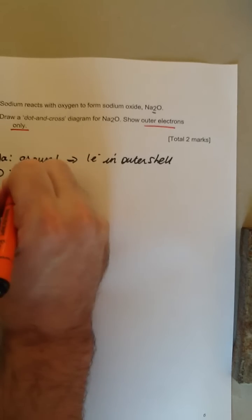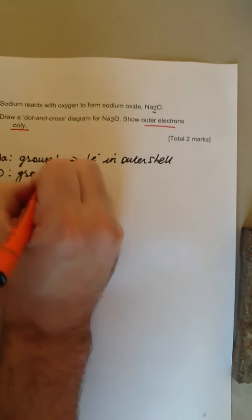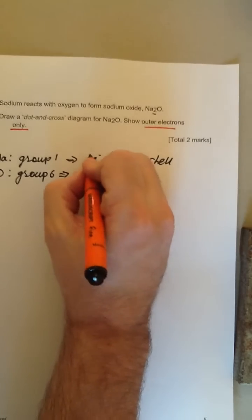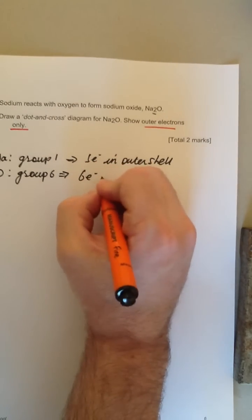Oxygen is in group six, therefore it has six electrons in its outer shell.